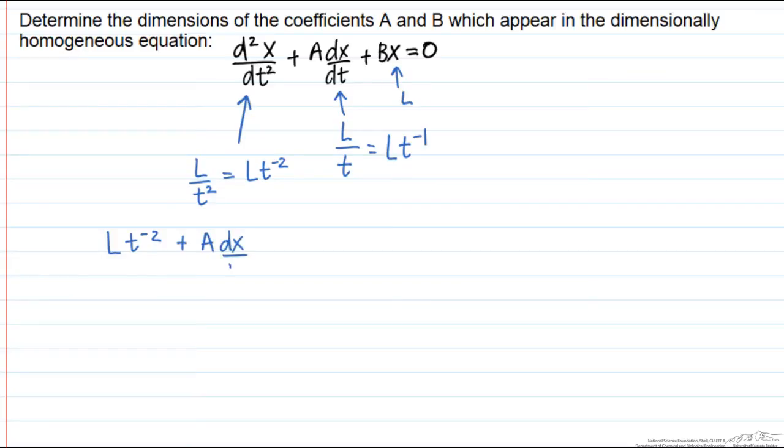So let's write them out. So here we have Lt⁻² plus A, now our dx/dt is length divided by time, or Lt⁻¹, plus B, and our x has dimensions of length, which equals 0.